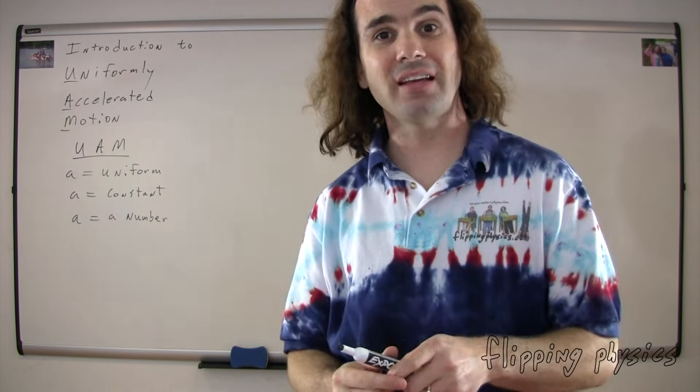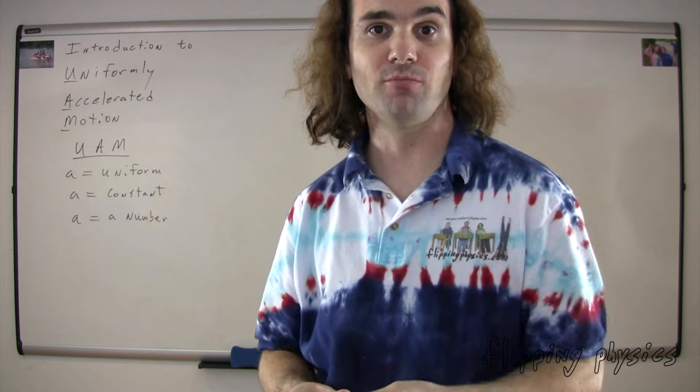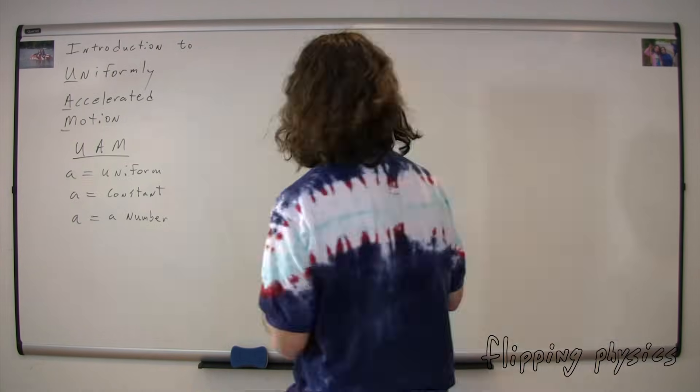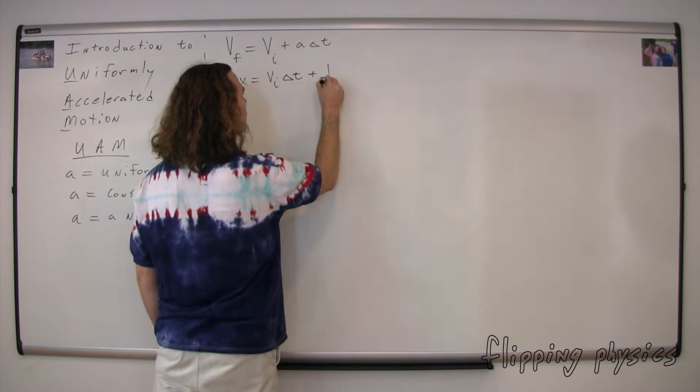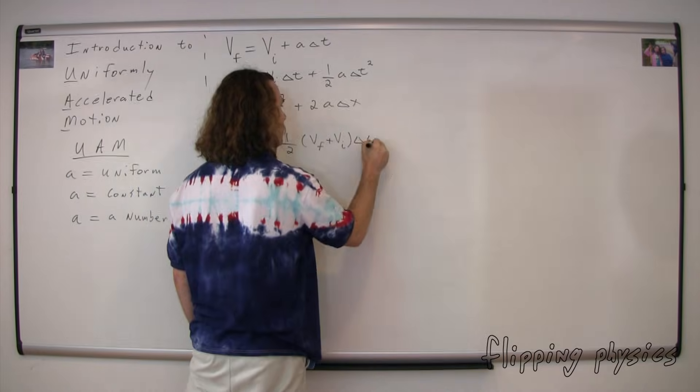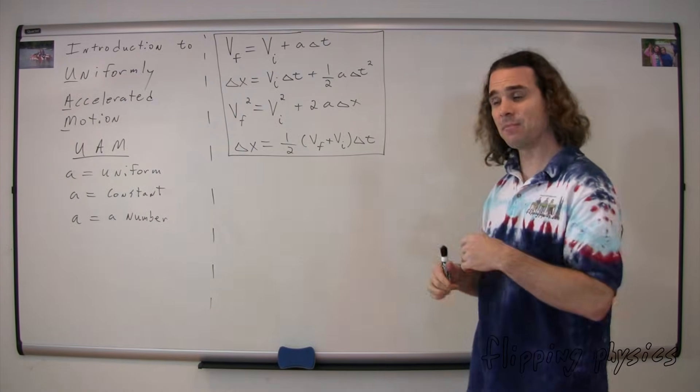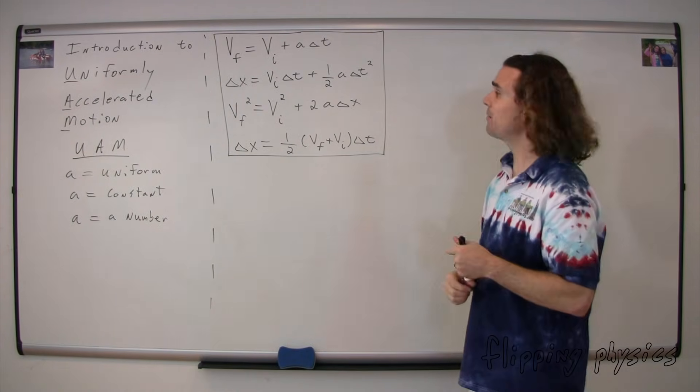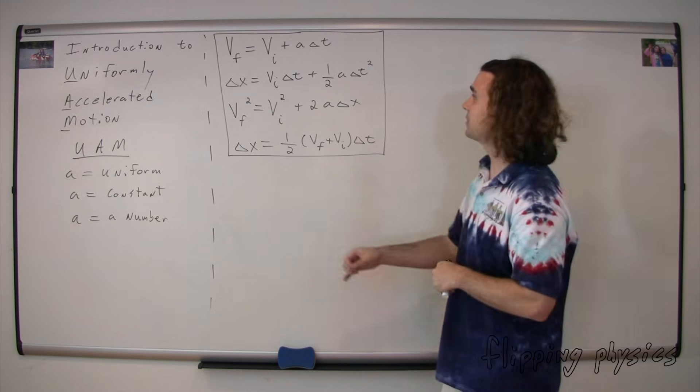Here are the equations that describe an object moving in uniformly accelerated motion. There are four UAM equations. I have written them right here. I'm now going to walk my way through each one of the equations.